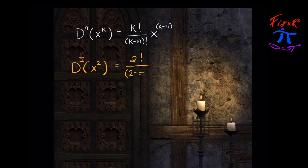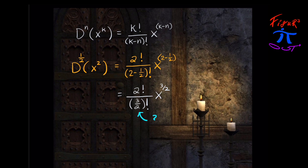Plugging in two for k, we get two-factorial over (2 − 1/2)-factorial times x to the (2 − 1/2) power, or in other words, two-factorial over (3/2)-factorial times x to the 3/2 power. But wait — what's (3/2)-factorial? How do you find something like that? In the world of counting, this doesn't seem to make a lot of sense.